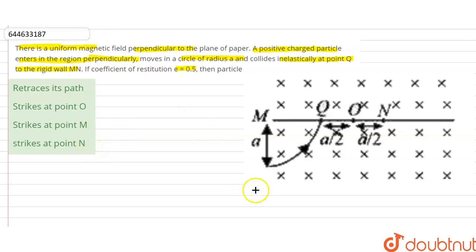So in this question we have one particle that enters the magnetic field with the velocity V. Now we can write the formula for radius that is equal to MV divided by Bq.